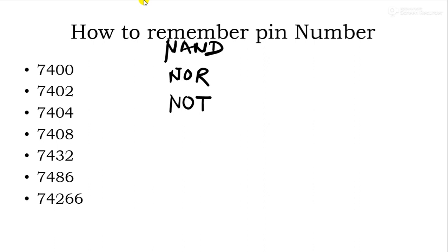Now complement this NAND, that is AND. Complement this NOR, that is OR. Then the remaining two gates that are XOR and XNOR. So this is only a trick, how to remember pin number. This is not a universal condition or specified at a universal level that you have to start with NAND only. This is my trick and I am just explaining it to you all.